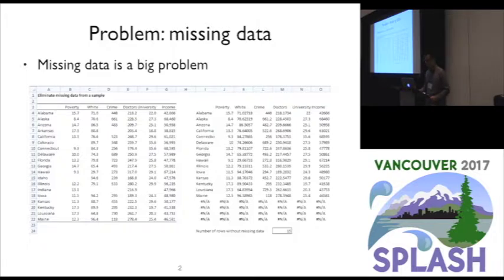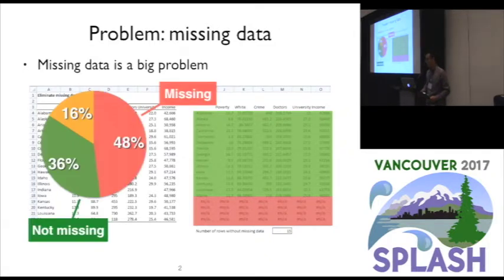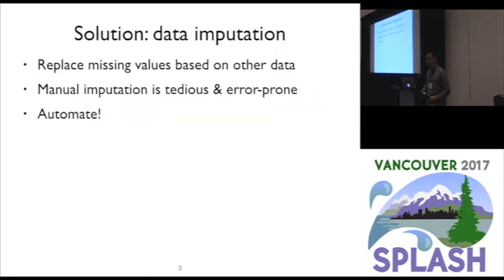The problem we're solving in this work is the problem of missing data. This is a serious problem because having missing data hinders data analytics. It is also a common problem — according to a survey of quantum studies, only 36% of the data sets had no missing data. One solution is data imputation, which is the procedure of replacing missing values based on other data. Manually performing data imputation is both tedious and error-prone, and therefore we'd like to automate this process.